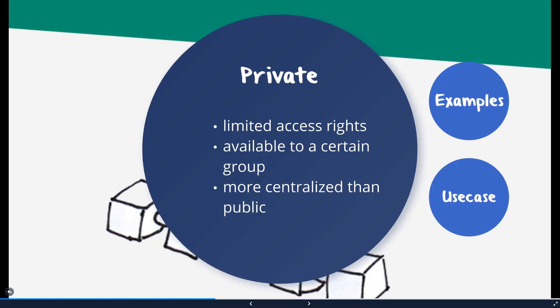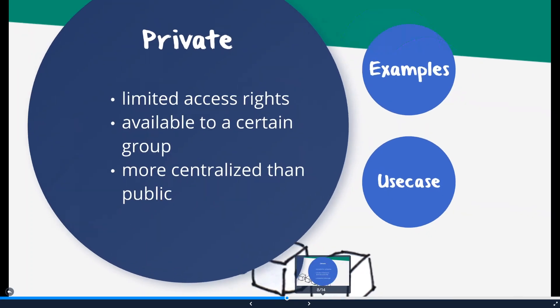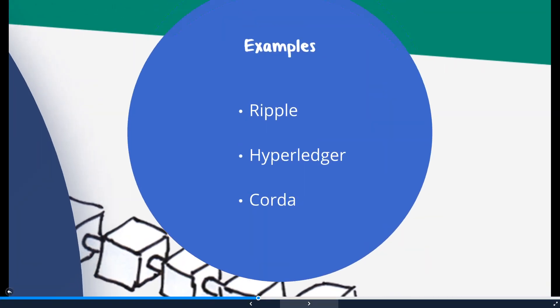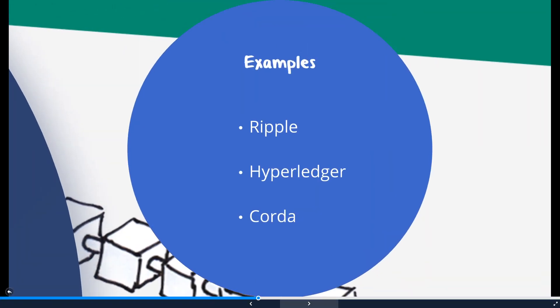Let's look at some examples of the private blockchain. We have Ripple, Hyperledger, and Quorum. There may be more out there, but here I've listed three examples of private blockchains.